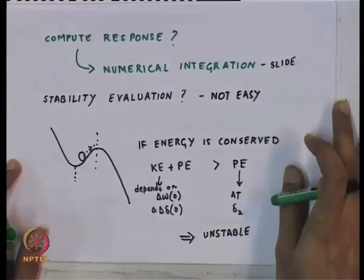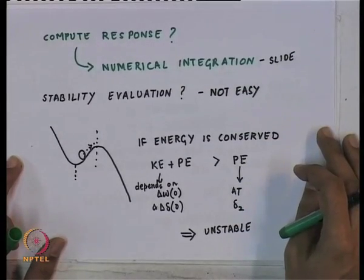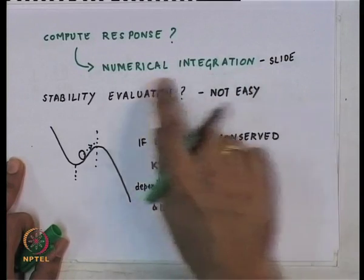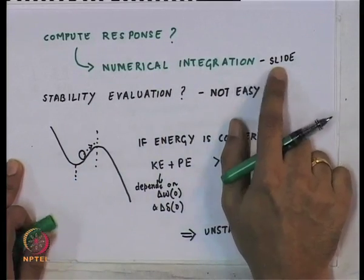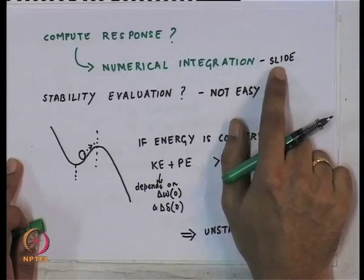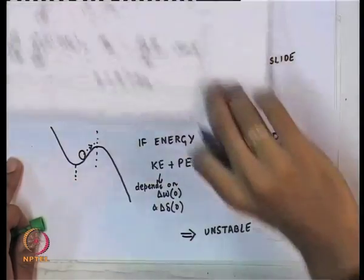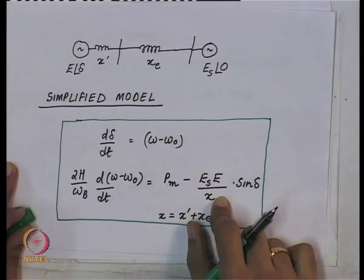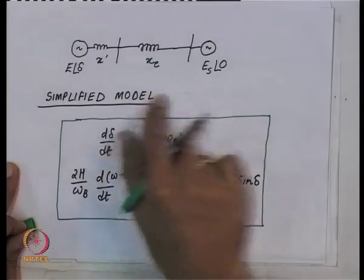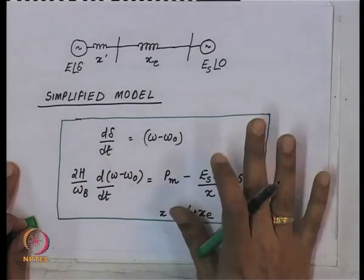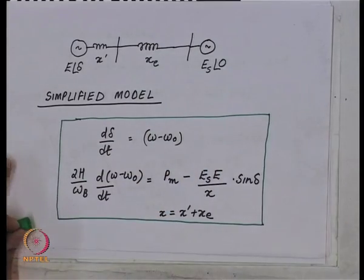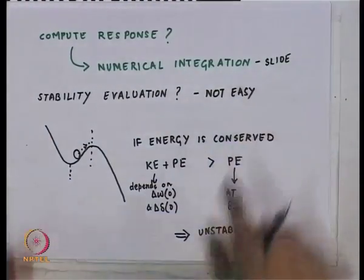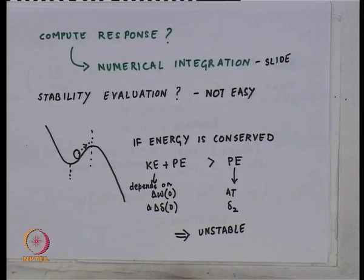These equations define the movement of the rotor angle, and due to the fault, the angles and speeds have deviated substantially from the equilibrium. How do you know whether the system is going to be stable or not? Well, you could numerically integrate the system. Numerical integration means the set of equations is discretized and solved — how to do this is something we will discuss later in the course.